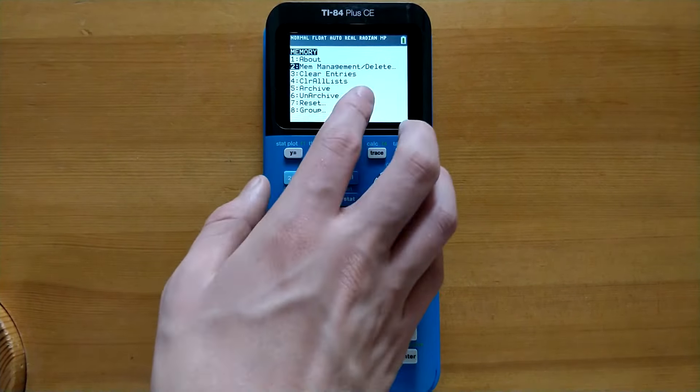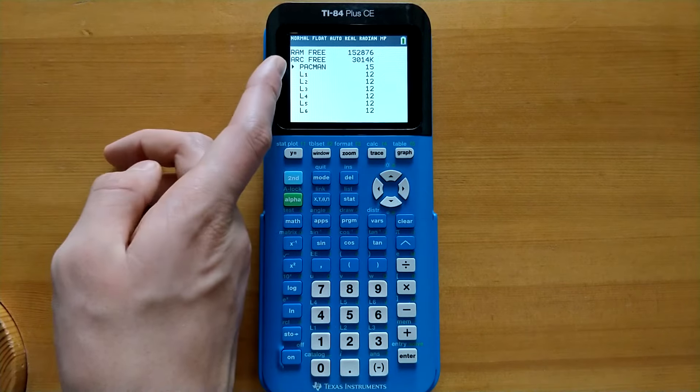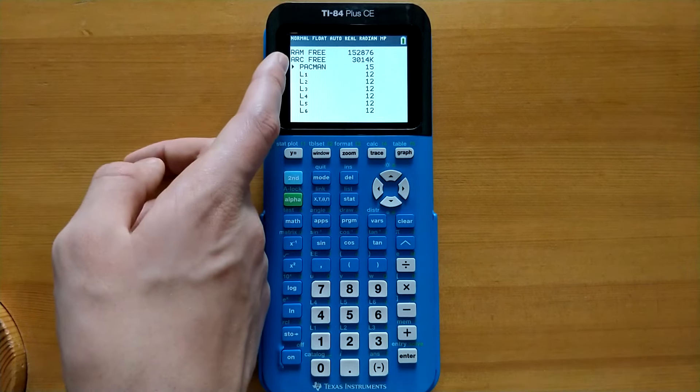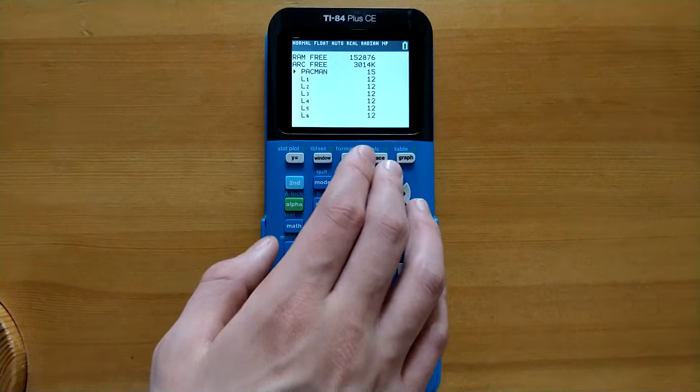And from here, you can see a list of everything that is stored on your calculator. So since we are trying to delete Pac-Man, we will bring the cursor to Pac-Man, which it is already, as you can see here.